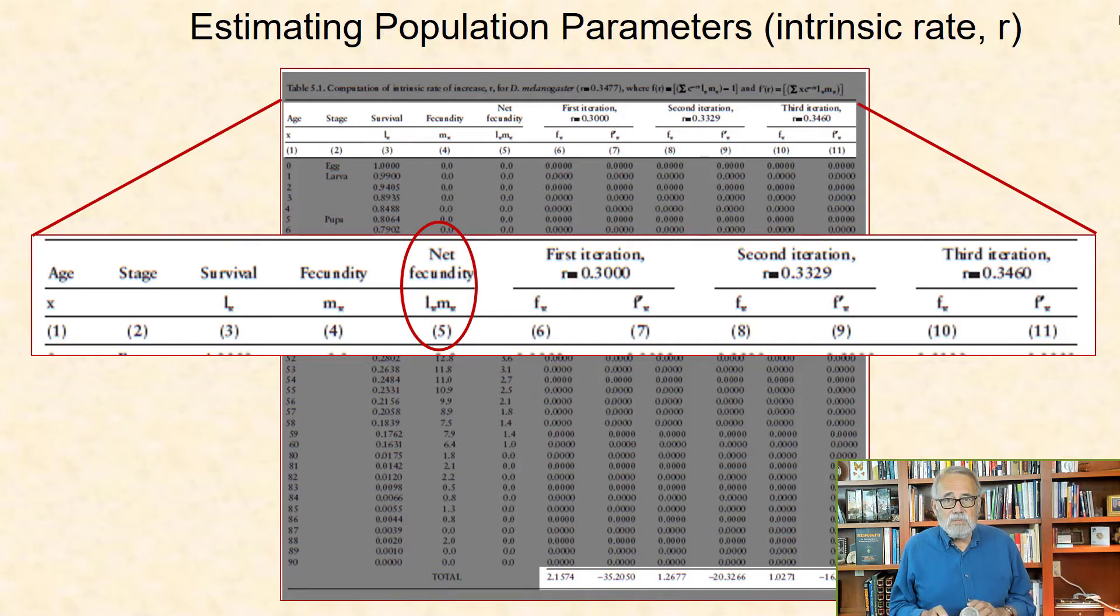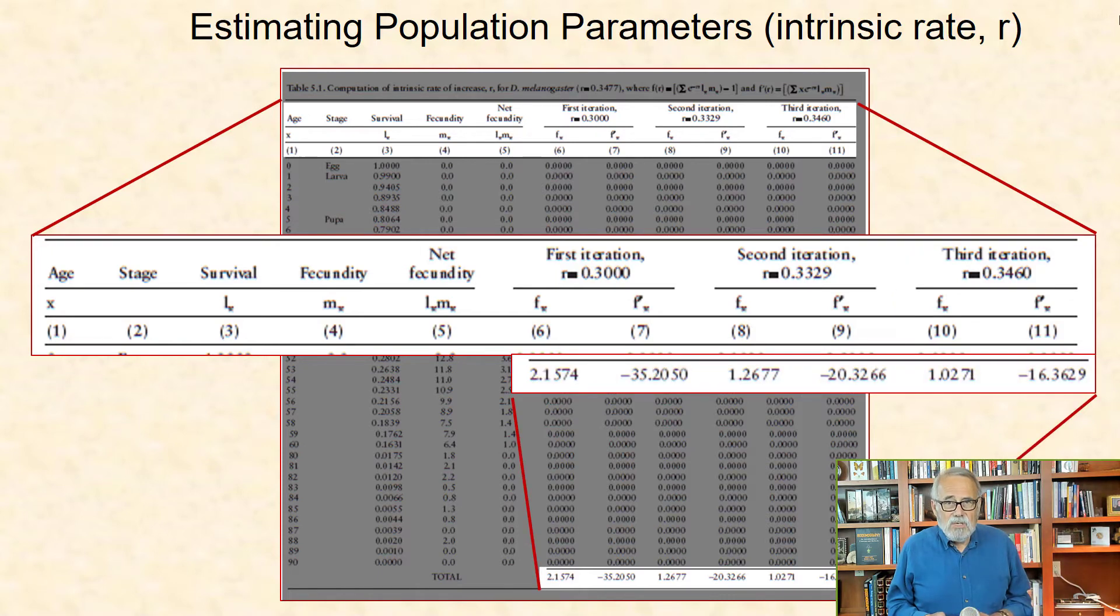Thus, column 6 contains the value of the components of the Lotka equation, and column 7 the value of its derivative function, both based on the initial value of r equal 0.3. Then the values for the second and third iterations that are needed are contained in columns 8, 9, and 10, and 11. The sum of these respective columns are shown here, and they will be used in the data organization of computations involving five steps.